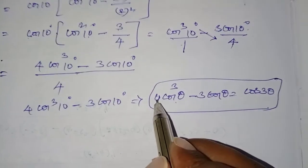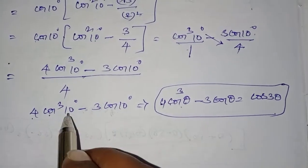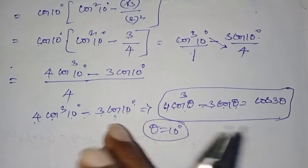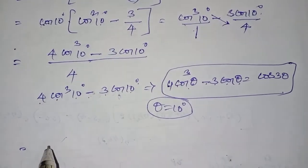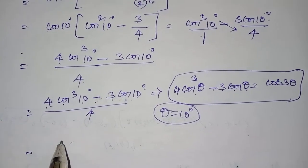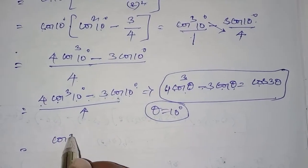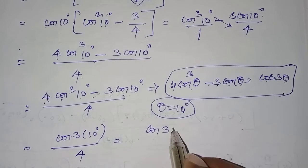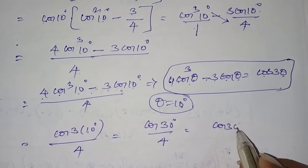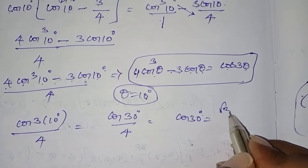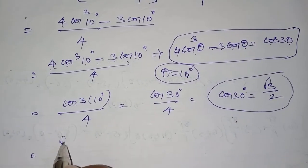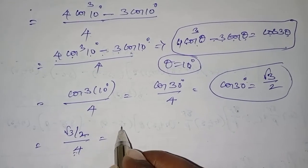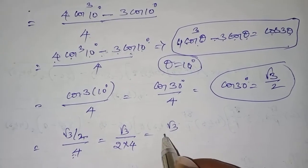This matches the formula 4 cos³θ - 3 cosθ = cos 3θ. Here theta is 10 degrees, so substituting, the numerator becomes cos(3 × 10°) = cos 30 degrees, divided by 4. We know cos 30 degrees equals root 3 by 2. Substituting: root 3 by 2 divided by 4, which equals root 3 by 8.